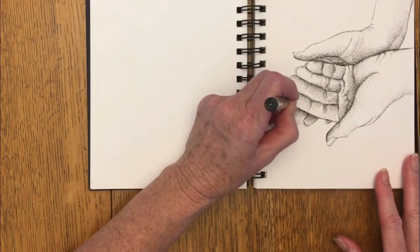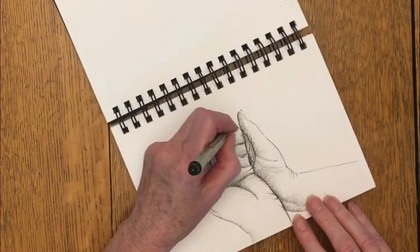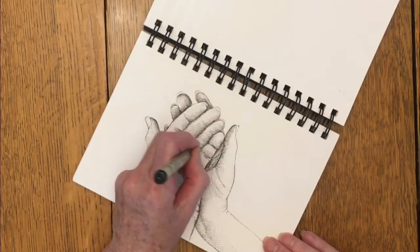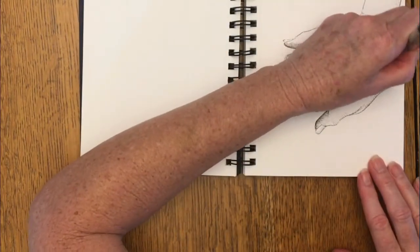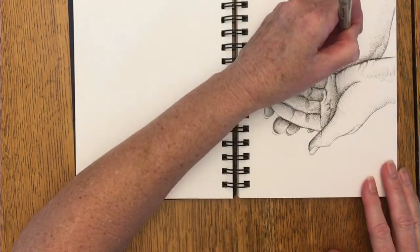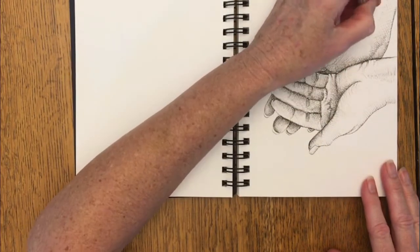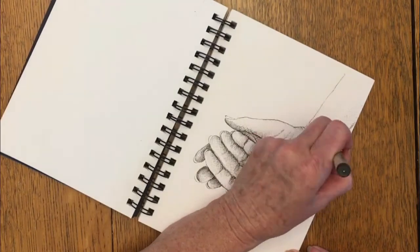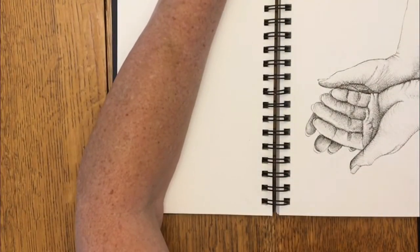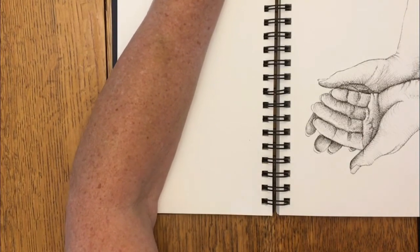Corrie ten Boom and her family hid some of these people in her home. And they even created a secret room where they could hide up to six people. And they did this for a long time until someone turned them in and then they were thrown into prison camps.